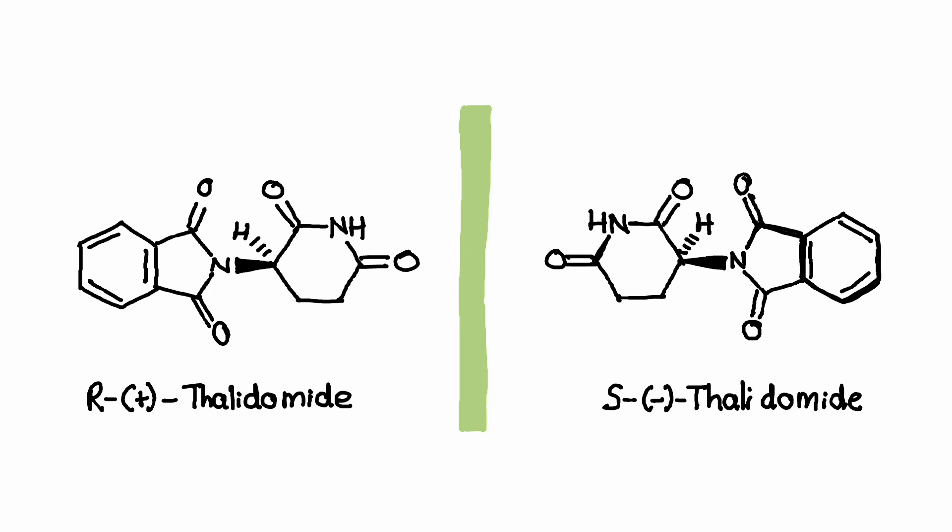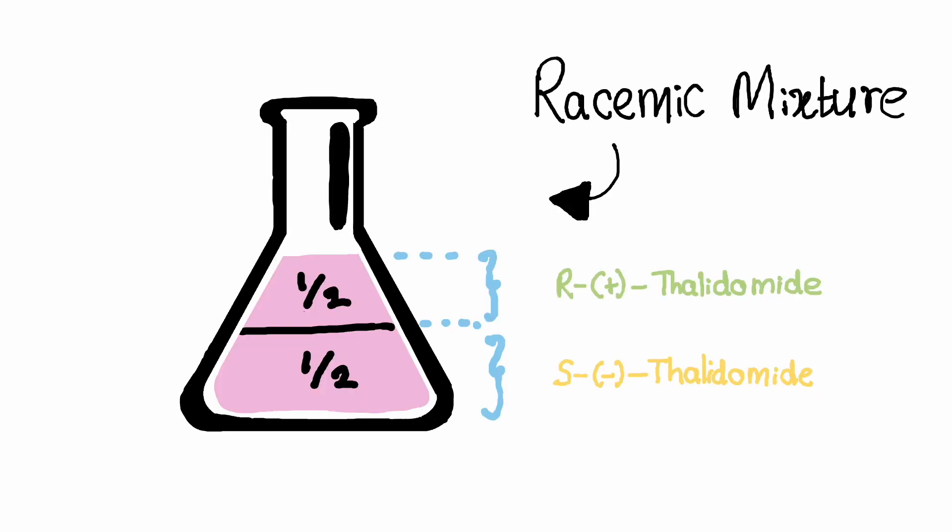A well-known example of a chiral drug is thalidomide. Thalidomide was introduced in the 1950s as a sedative and an anti-nausea medication. Unfortunately, during this time, the knowledge about different types and properties of enantiomers was not well understood. Thalidomide was marketed as a racemic mixture, meaning that it contained equal amounts of both enantiomers.